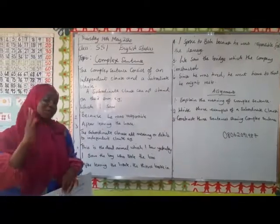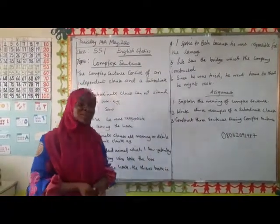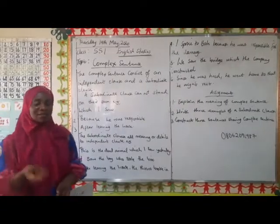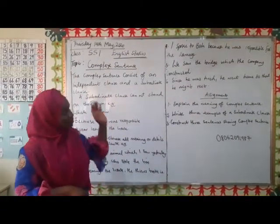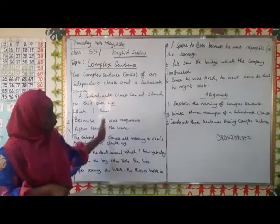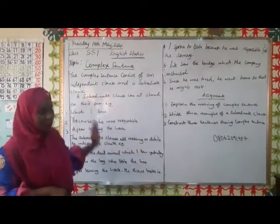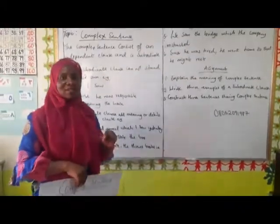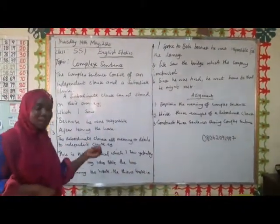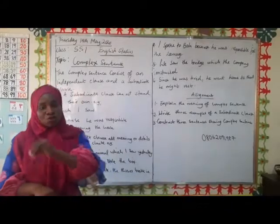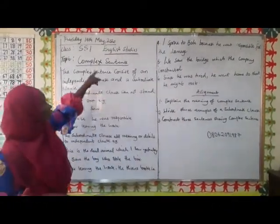We said there are four types of sentences which include the simple sentence, the compound sentence, the complex sentence, and the compound-complex sentence. These sentences are different in their formation because what one particular type of sentence entails is different from what the other one requires. So today we shall be looking at the complex sentence.